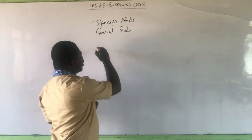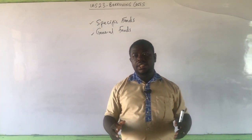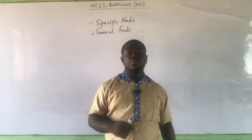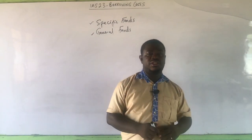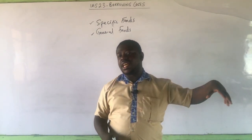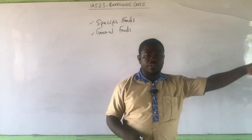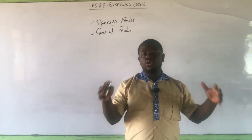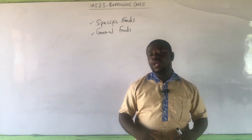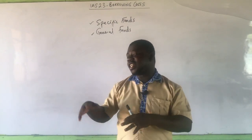When we come to general funds or general borrowings, these relate to the already existing pool of funds in the capital structure of the business. Most businesses have debts in their capital structure — there is an equity component and debt components. There are already existing borrowings: it could be one, two, or three sources. We borrowed from the bank, we have bonds, we have debentures. All those are already there as general borrowings. Let's assume we secured those loans at a time when we didn't have the idea of constructing a qualifying asset.